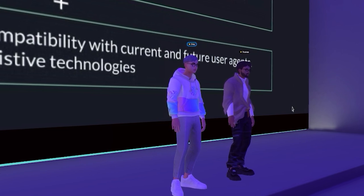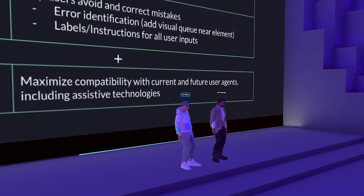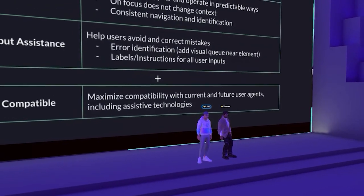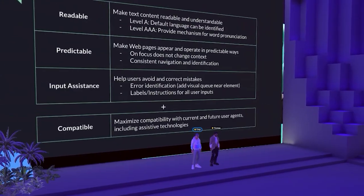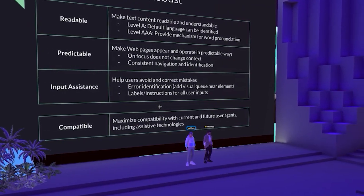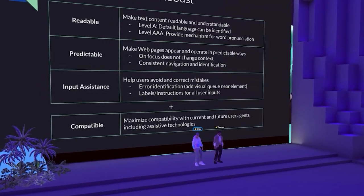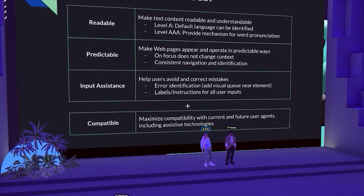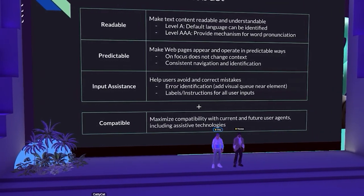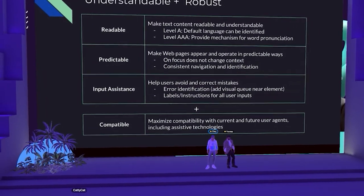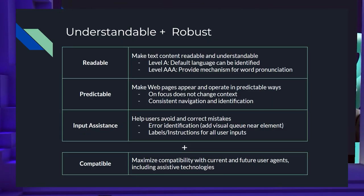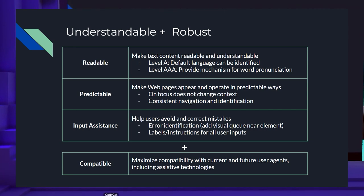For the robust principle, it's about compatibility. For a product to be robust, it needs to be able to grow and be compatible with the assistive technology market, which is huge. There are a lot of applications and tools out there — stay on top of research to see what users are actually finding helpful and make sure your product is compatible with those technologies.